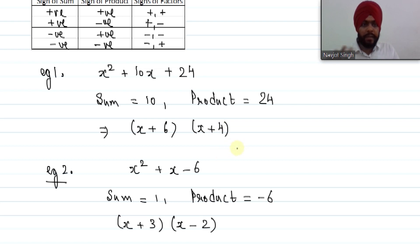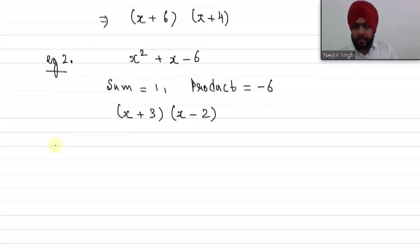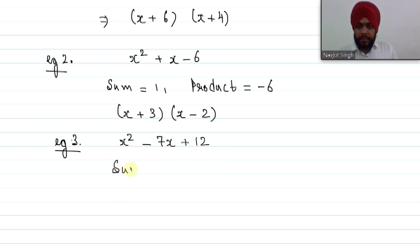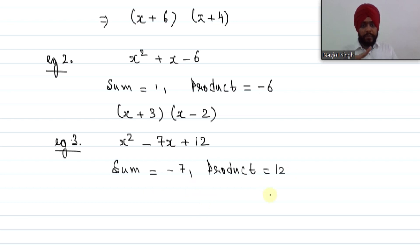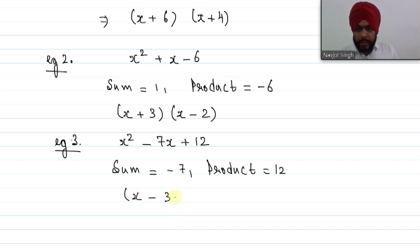Example 3 — sum negative, product positive: x² − 7x + 12. The sum is −7 and the product is positive 12. Since the product is positive, both factors have the same sign, and since the sum is negative, both factors are negative. Two numbers whose product is 12 and sum is −7 are −3 and −4. So the factors are (x − 3)(x − 4).